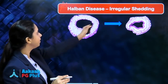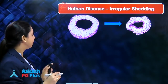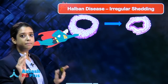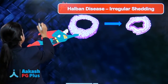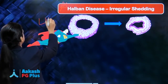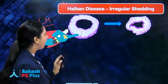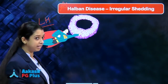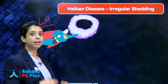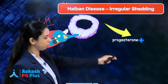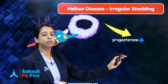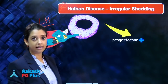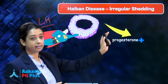But what is happening in Halban disease is that this LH persists. The main pathology of Halban disease is persistent LH which does not go away. As a result, the corpus luteum also does not become atretic — it stays and keeps on secreting progesterone. This progesterone, which was supposed to fall at the end of the cycle, goes on being secreted.